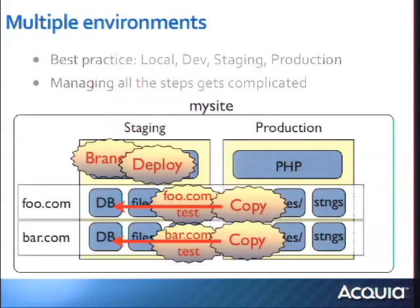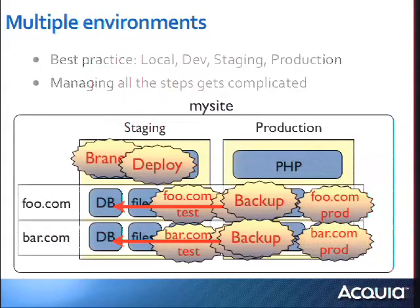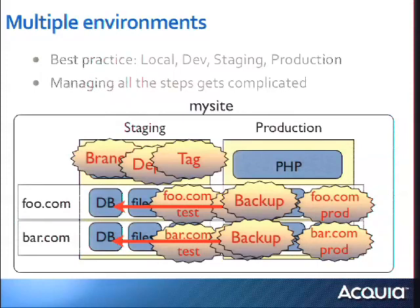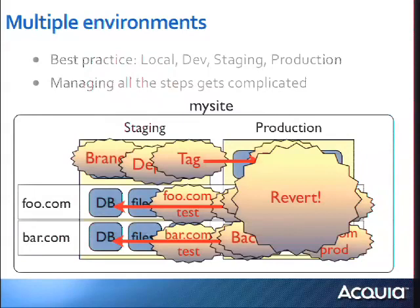You probably want to work with a copy of your production database when you do your test with new code, so you copy your foo.com and bar.com databases across. Your test goes well and you're ready to deploy live. Before that, you want to make a backup of your production databases, make sure your settings files are correct for production, make a symbolic tag in your version control system, and then copy the code over to production. How many people have ever pushed code to a live environment and only then discovered there was a mistake? Then you've got to revert the whole thing. That is a pain in the neck.